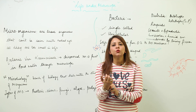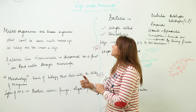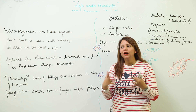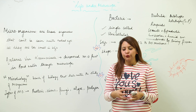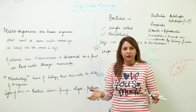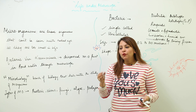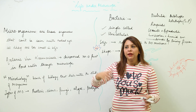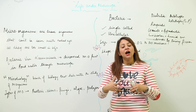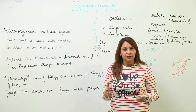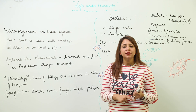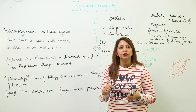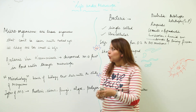We are going to start with a unit called 'Life Under Microscope.' There are a variety of organisms ranging from very minute to very big — from tiny microscopic bacteria to a huge elephant — and they are all categorized as organisms. In this chapter, we are going to study about microorganisms.